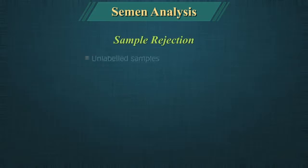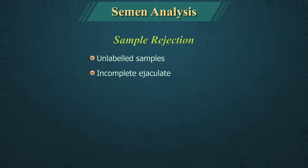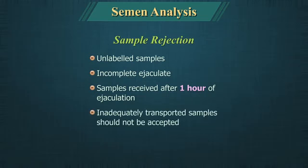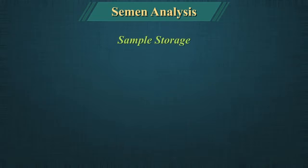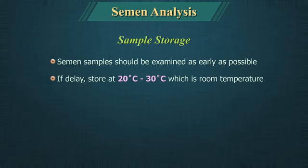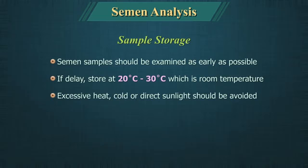Sample rejection: Unlabeled samples, incomplete ejaculates, samples received after 1 hour of ejaculation, or inadequately transported samples should be rejected. Sample storage: The semen sample should be examined as early as possible. If delay is likely, store at 20°C to 30°C (room temperature). Excessive heat, cold or direct sunlight should be avoided. Do not store the sample in a refrigerator.